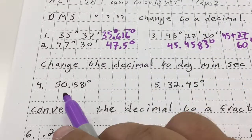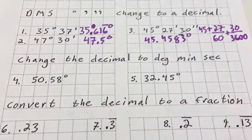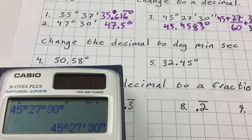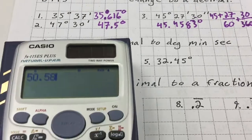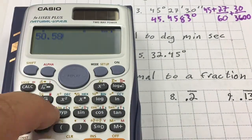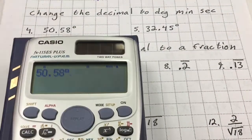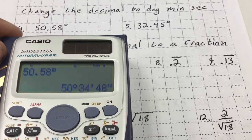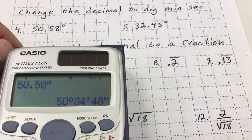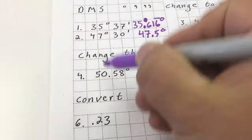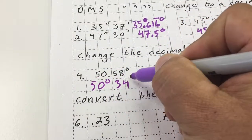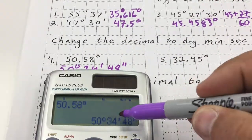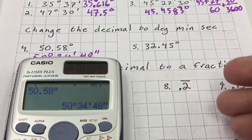Now I'm going to change the decimal 50.58 degrees to degrees, minutes, seconds. I type in 50.58 on the calculator, then hit the degree button, and just hit equals — and it does it for you without needing the SD button. That gives 50 degrees, 34 minutes, 48 seconds. Notice the answer shows the degree symbol, single quote, and double quote.